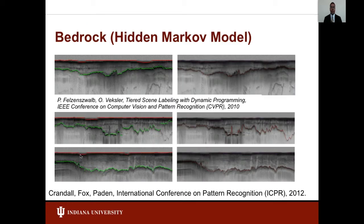This technique is based on a statistical framework called Markov random field models, which allow evidence from both local and global features to be combined into a single probabilistic framework for detecting layer boundaries.